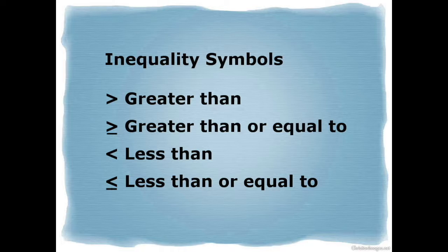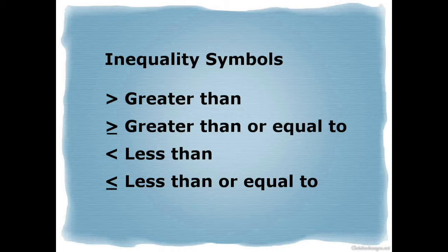Today we're going to be solving and graphing inequalities. Before we do, let's look at some symbols of inequality. These symbols are used for equations instead of an equal sign. The first symbol is an arrow pointing to the right, and that means greater than. If you see that arrow with a bar under it, that means greater than or equal to. The arrow pointing to the left means less than, and with a bar under it, means less than or equal to.